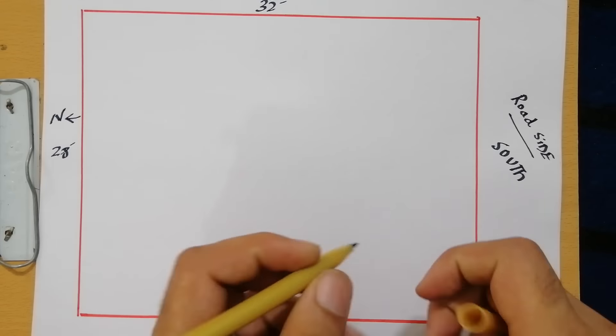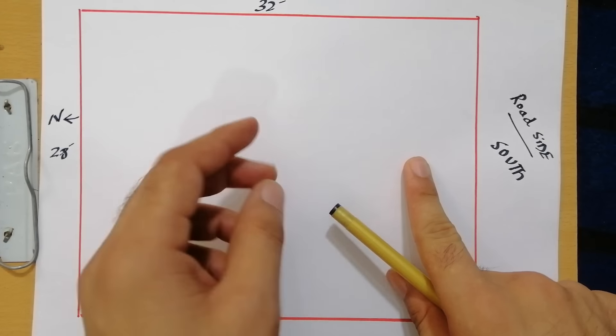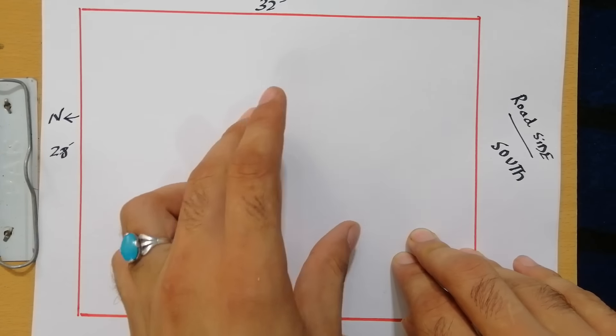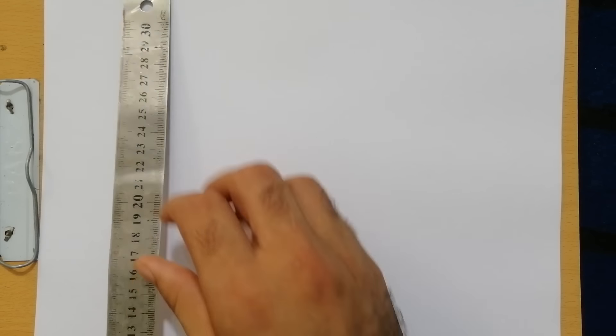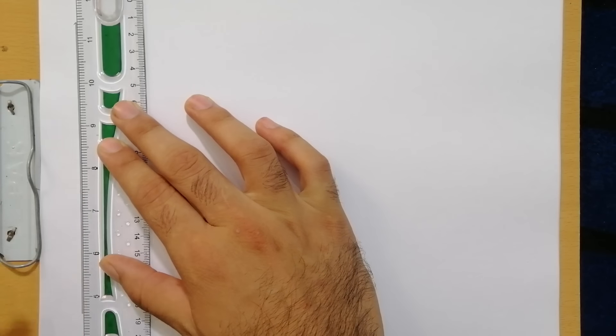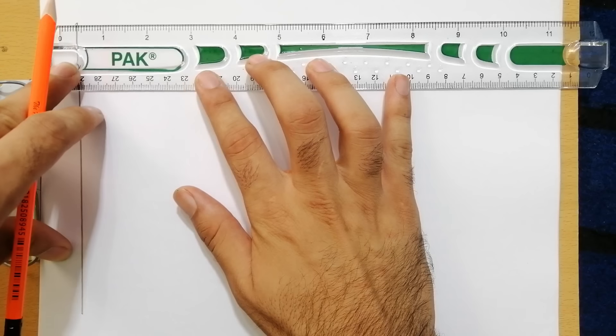Before starting a house plan, you will use the block method. My requirements are three bedrooms, kitchen, toilet, staircase, living room, TV lounge, etc. I will use the block method — this is just a rough sketch.